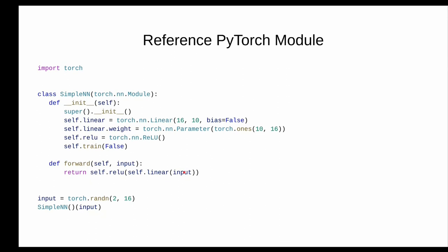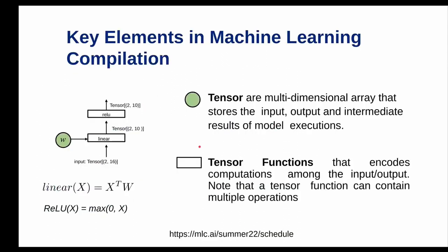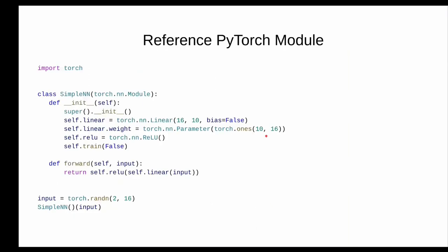Regarding the 10 and 16 dimensions: 10×16 is basically the weight held by the linear module. The input is 2×16, and the linear layer produces an output of 2×10. The linear operation performs a transformation X transpose times W, so the weight W has to be 10×16 to work correctly.